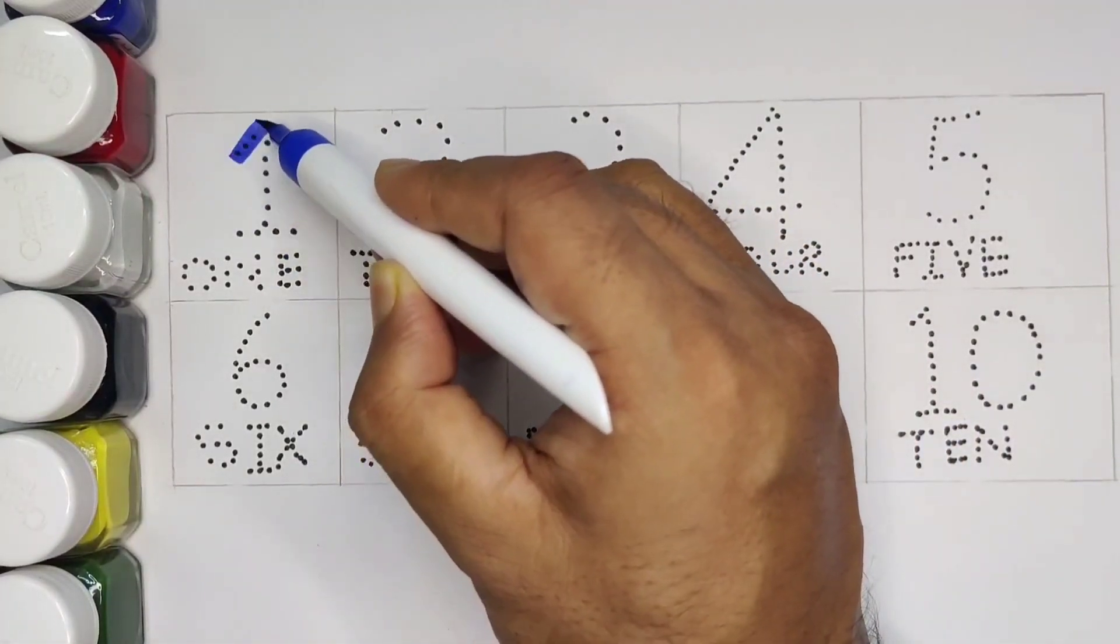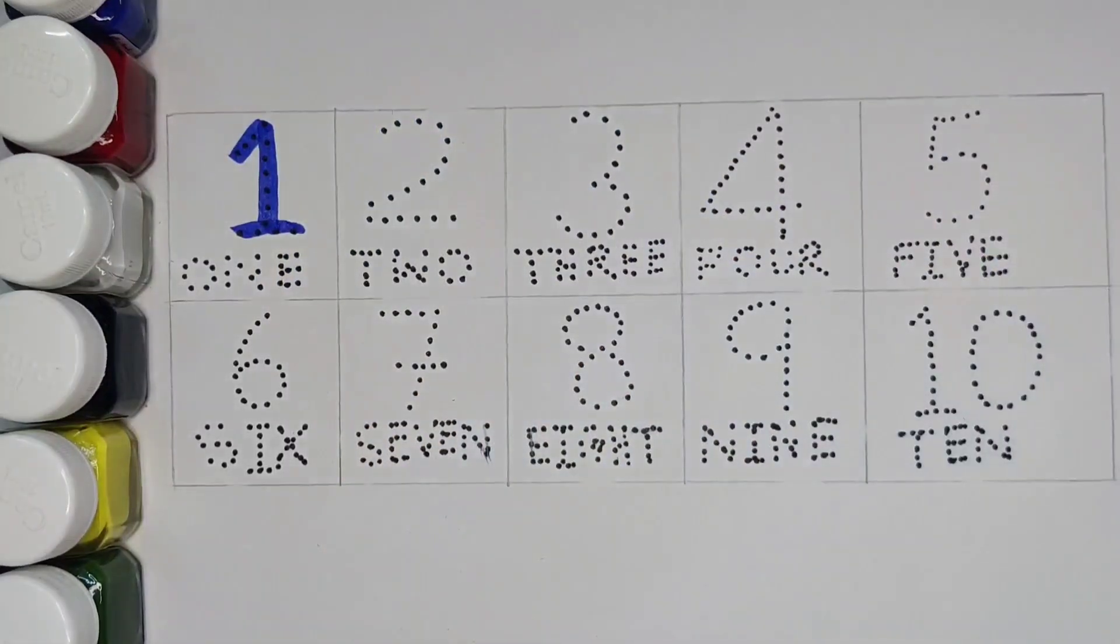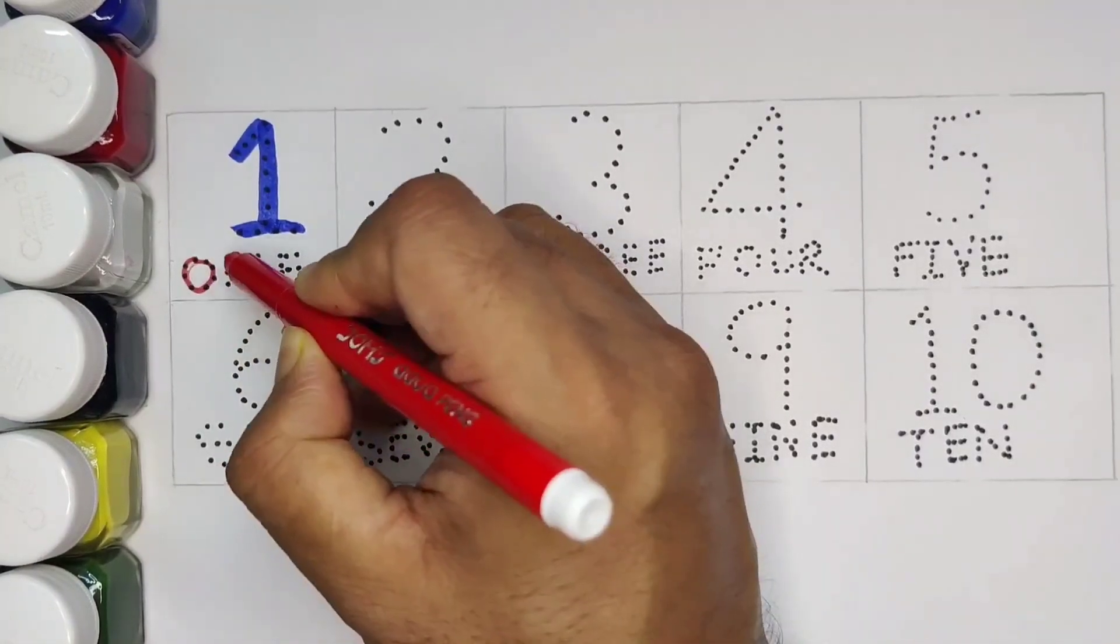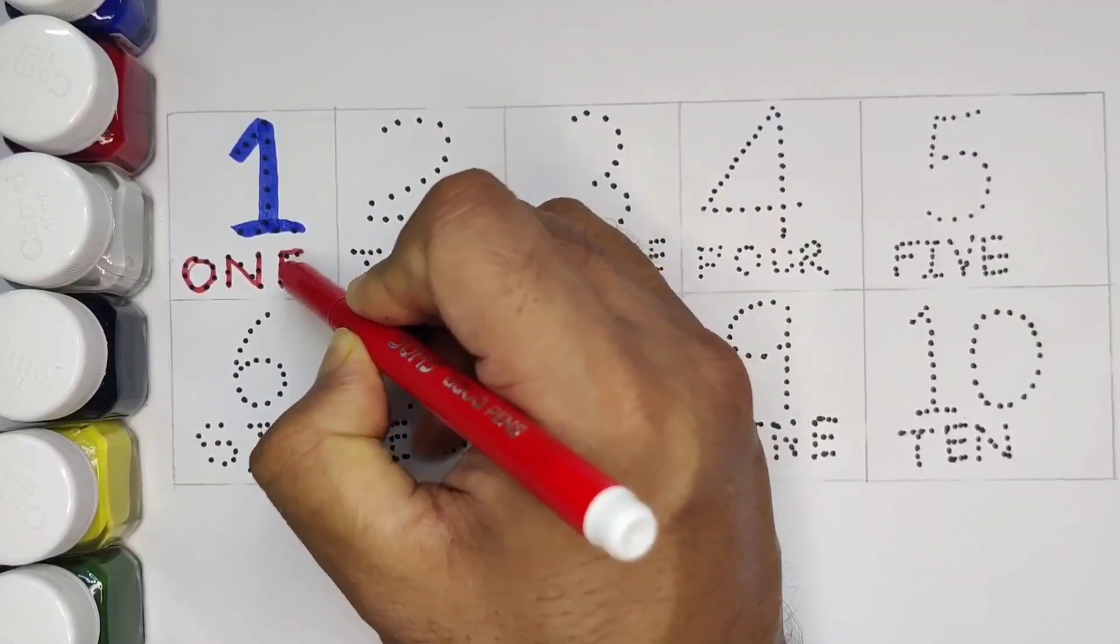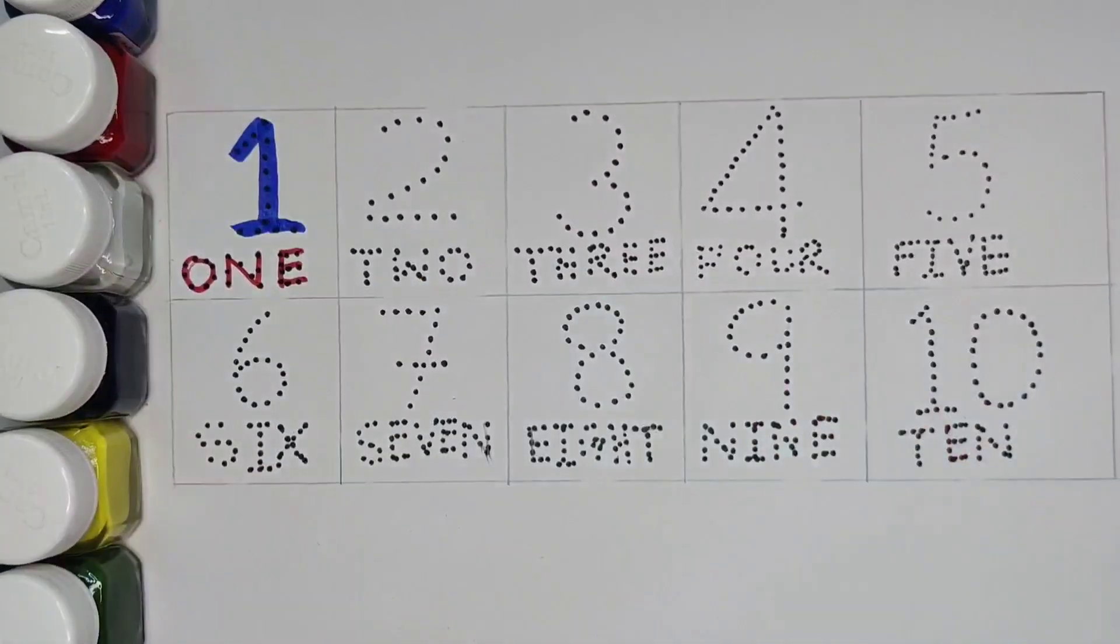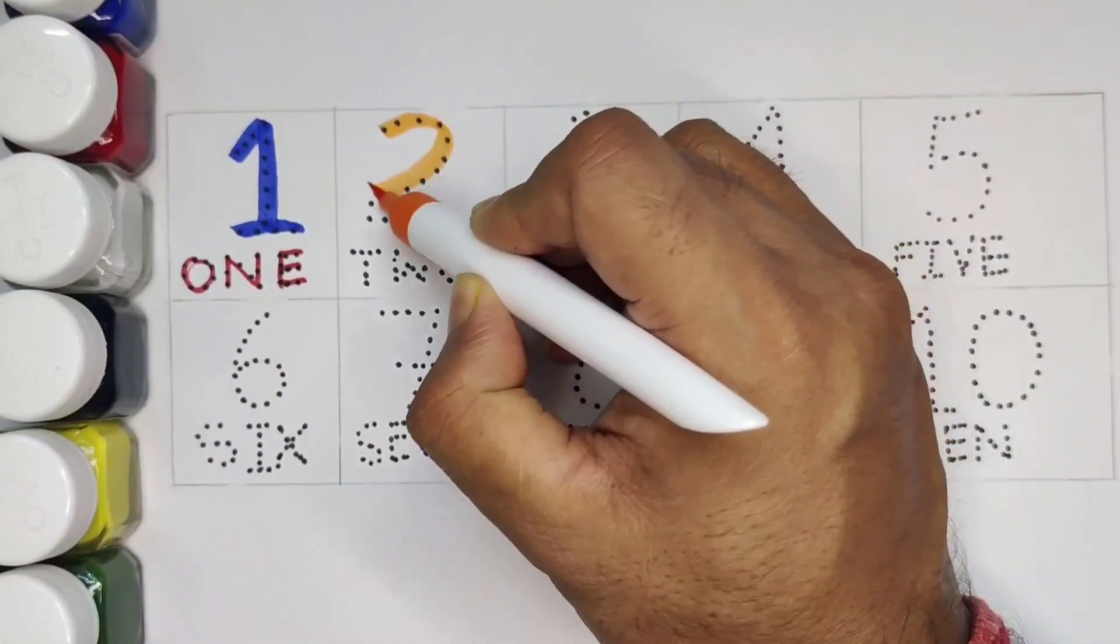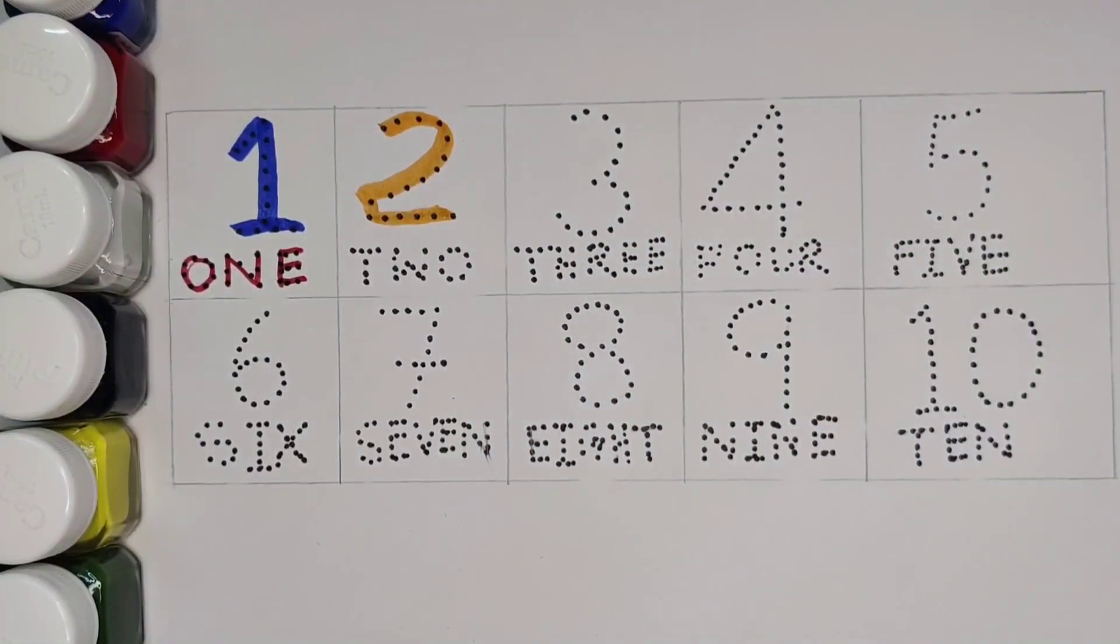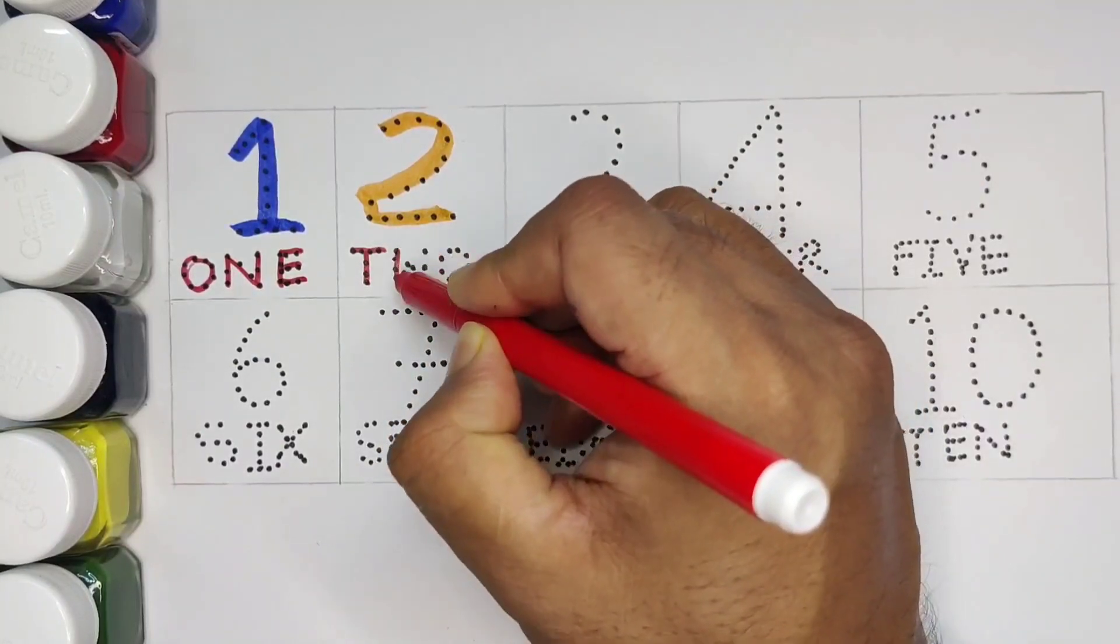This is 1. Blue color. And spelling is O.N.E. 1. Now 2. Orange color. Spelling is T.W.O. 2.